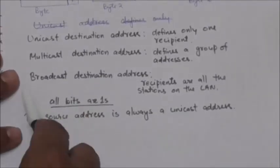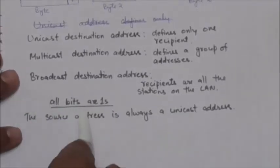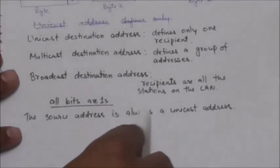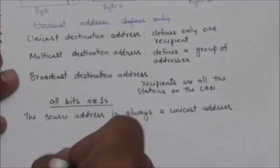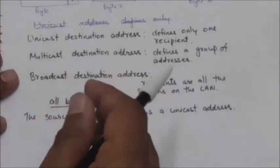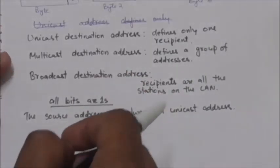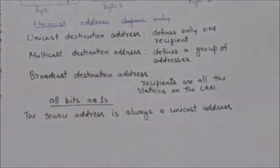The source address is always a unicast address, because the frame comes from only one station.